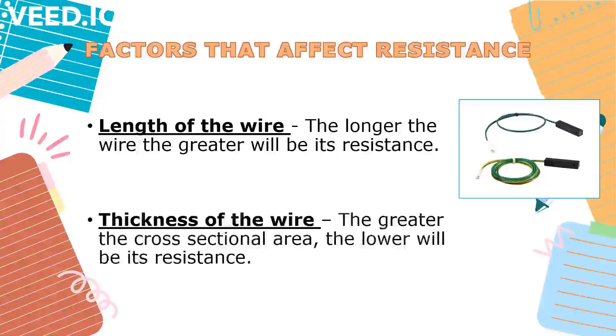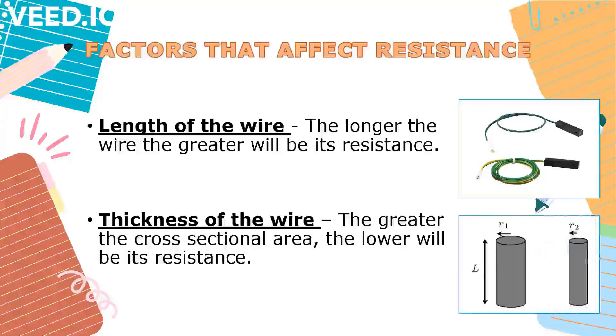Second, thickness of the wire. The greater the cross-sectional area, the lower will be its resistance. Thick wires have less resistance than thin wires because thick wires have greater cross-sectional area for the electron to flow than thin wires.